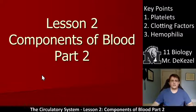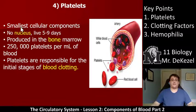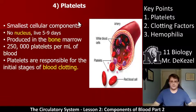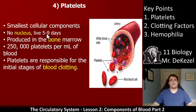We're going to continue from number 3 — this is number 4: platelets. Platelets are very very small; they are the smallest cellular components, not counting nutrients or vitamins. Key point one: they have no nucleus. They are essentially little spiky things, as you can see in the diagram, and they live anywhere between five and nine days.